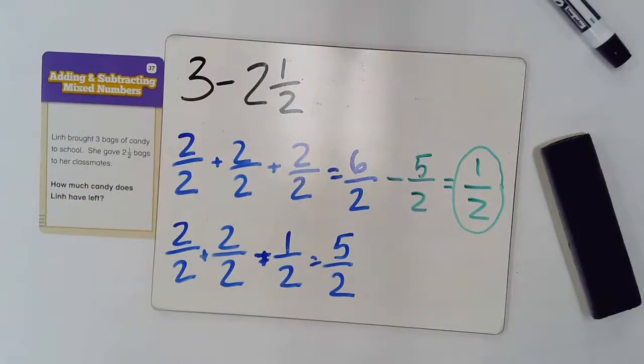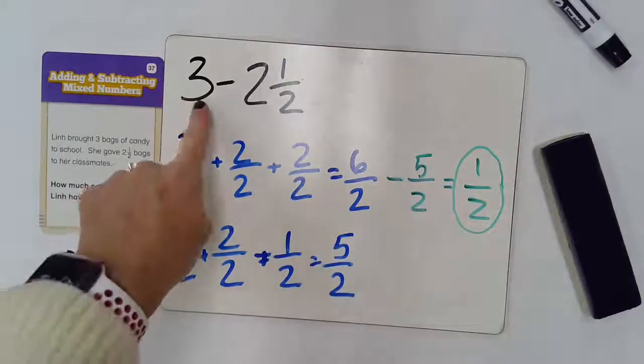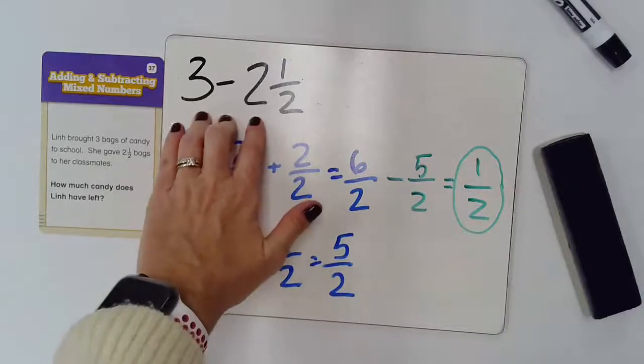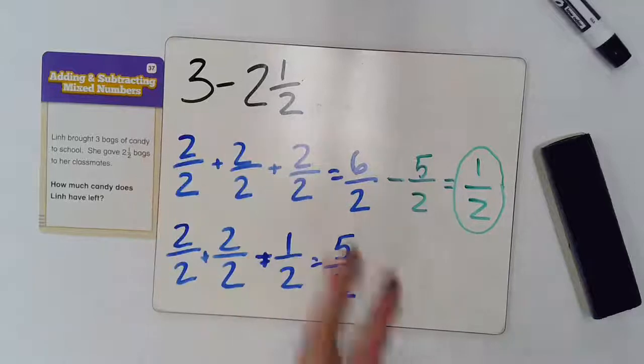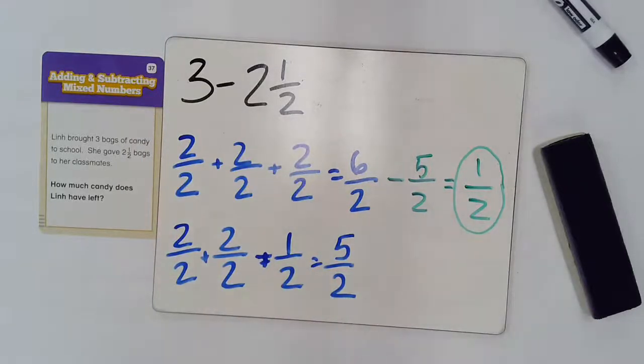So, as you begin to add and subtract mixed numbers, think about different ways that make sense to you. Think about changing these numbers into improper fractions, so finding those equivalents. Also, think about drawing them out if that might help you.